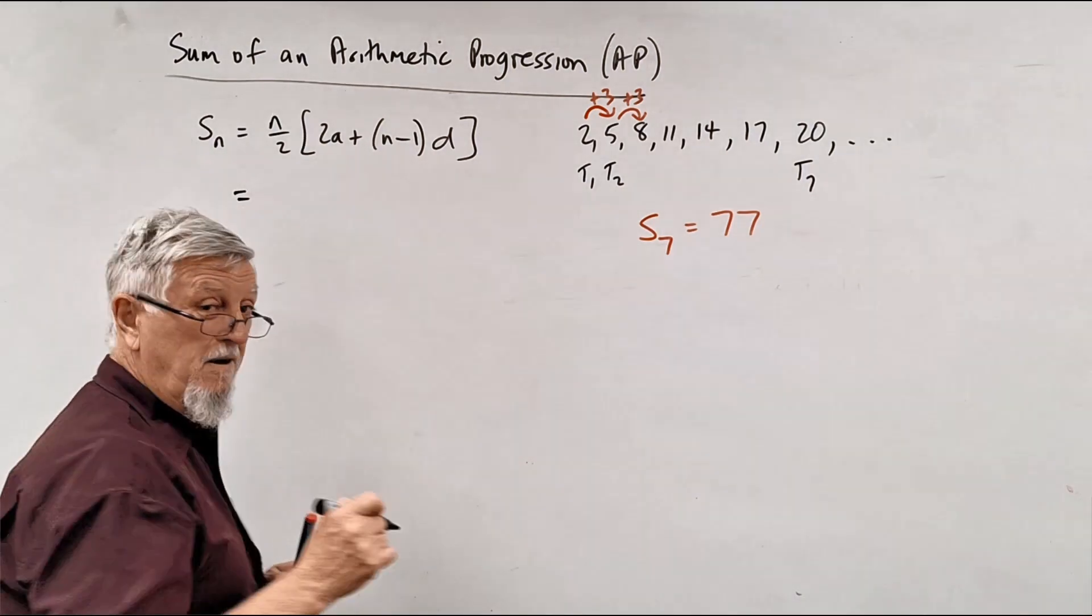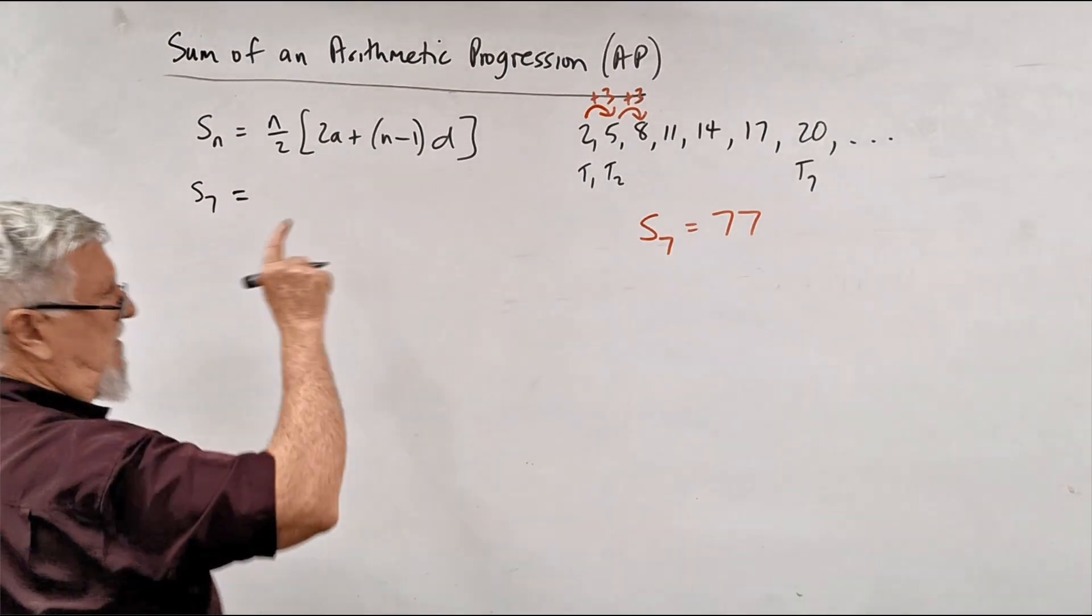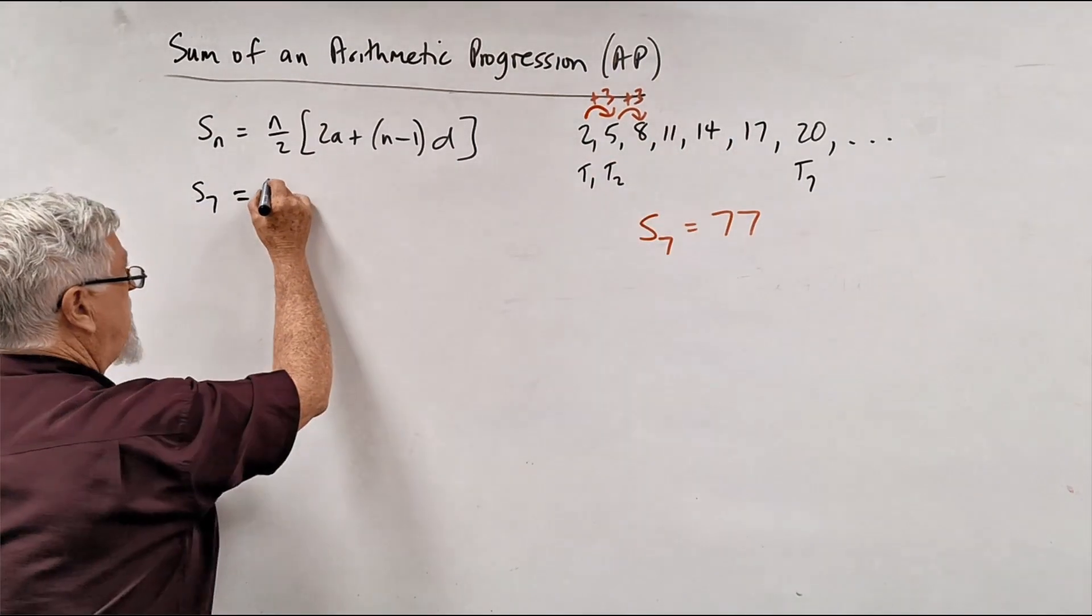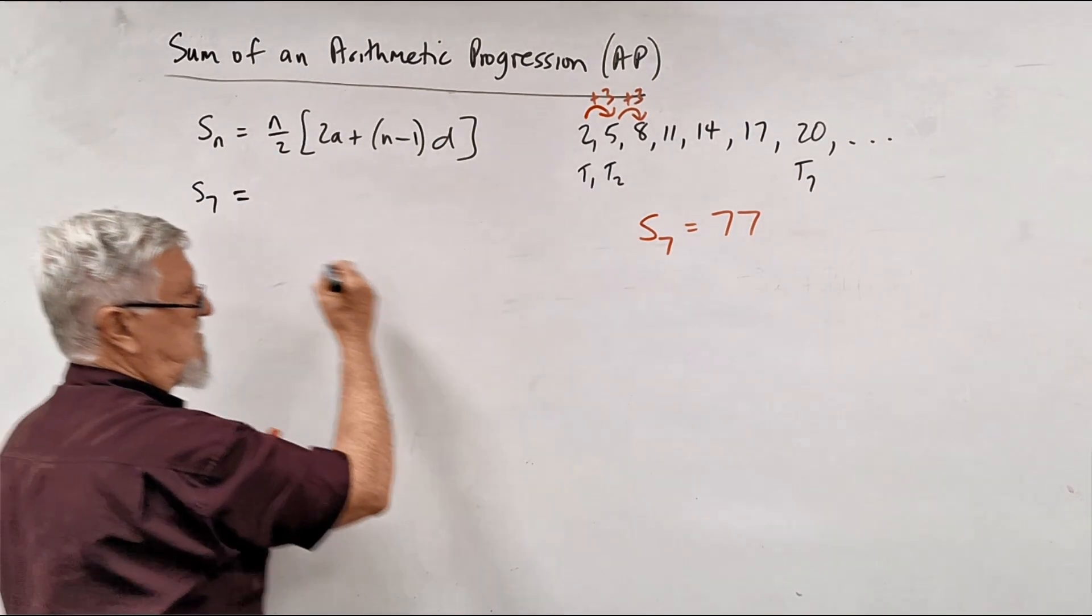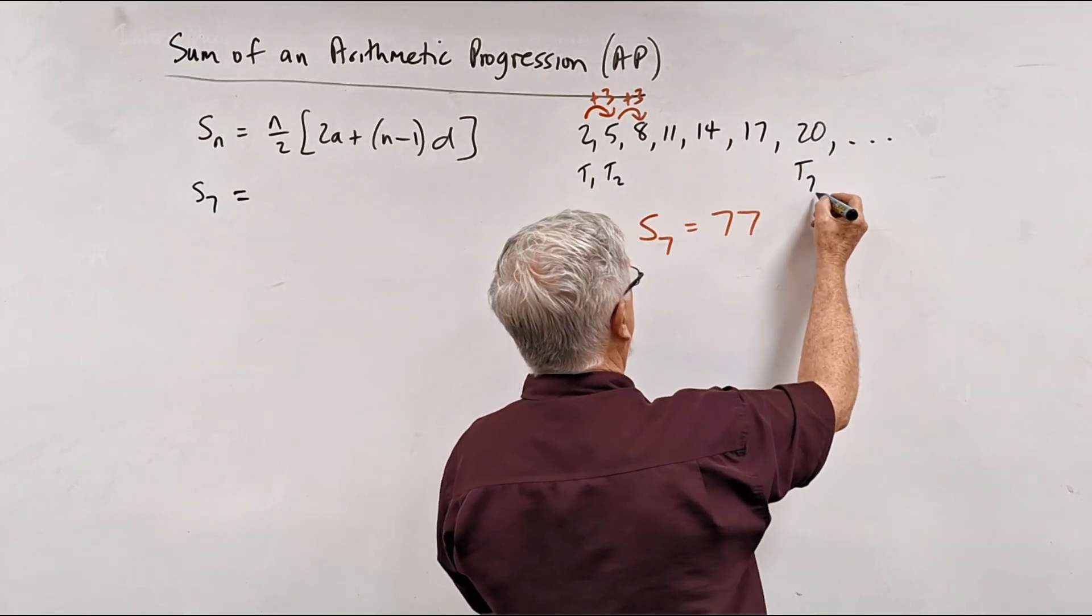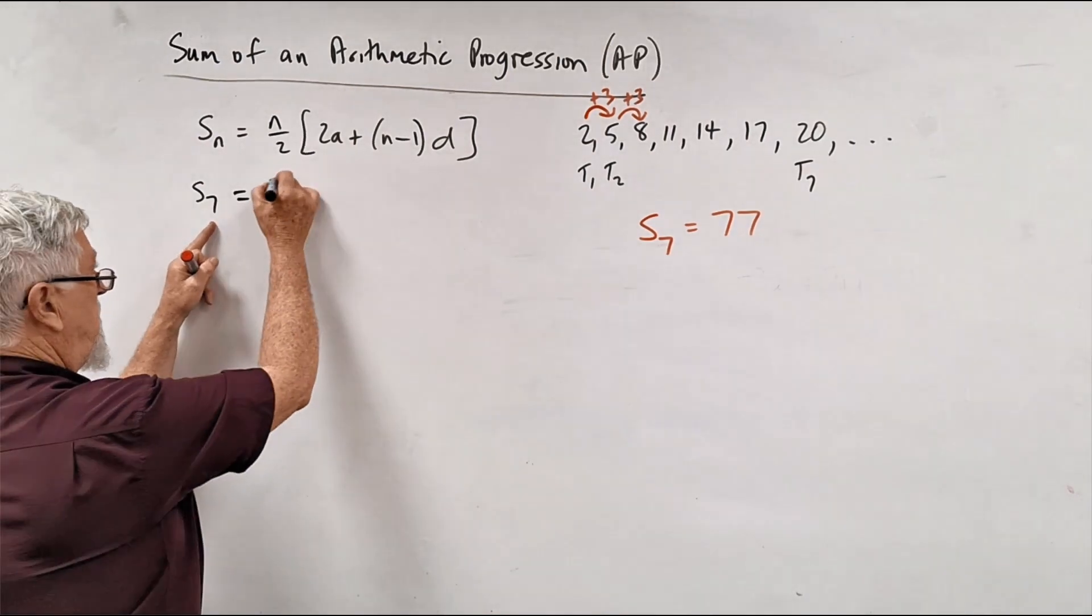So let's have a look there because I'll put it in the non-calc section. So we want the sum of the first 7 terms of that series. Let's have a look at that. So sum is 7, so the number of the position that we want to get up to. See, there's the first position, second position. That goes up to the 7th position. We want to sum the first 7 positions.